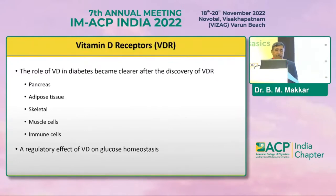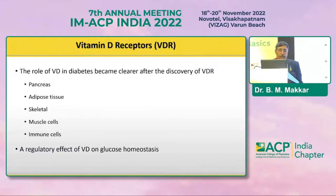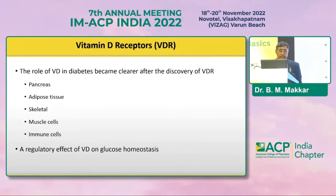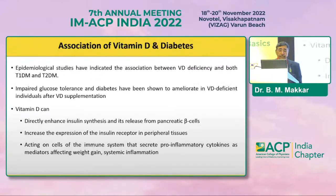Vitamin D's role has become clearer after the discovery of the vitamin D receptor. We now know that vitamin D has an important role in regulation of glucose homeostasis in the pancreas, in regulation of inflammation, maintaining a non-inflammatory state at the systemic level, skeletal mobilization and metabolism. It has receptors in muscle cells and immune cells, making all these sites important for vitamin D action.